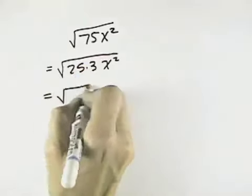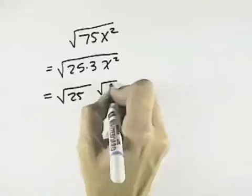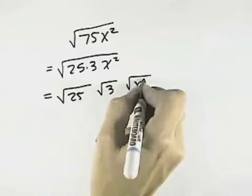So this is the same as the square root of 25 times the square root of 3 times the square root of x squared.